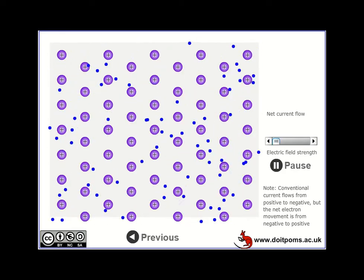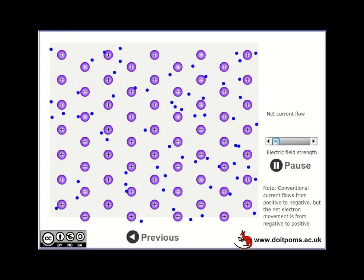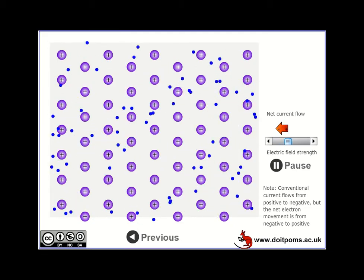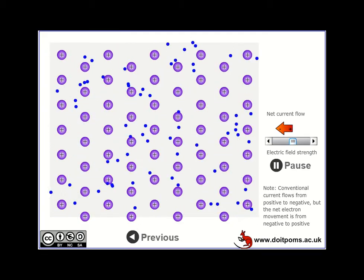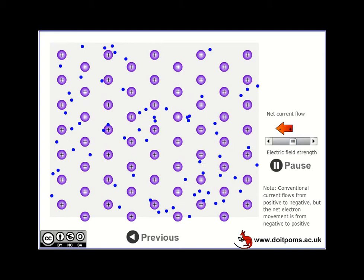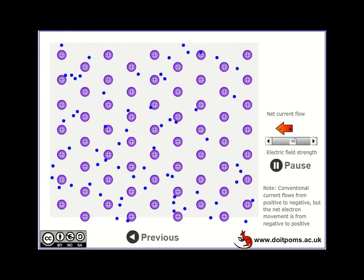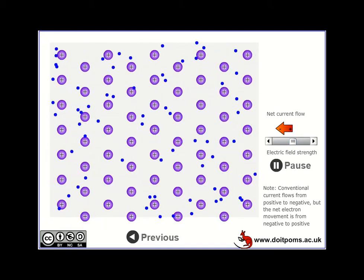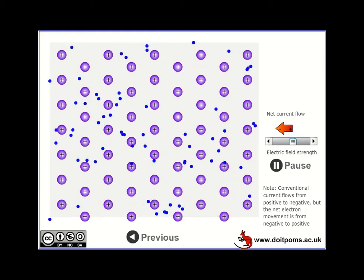So what I'm going to do now is apply an electric field. We know that electrons are negatively charged. If you can see here, this arrow, I'm making the left side of the material negative and the right side positive.